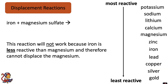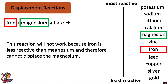Here is an example that would not work: iron plus magnesium sulphate. This reaction will not work because iron is less reactive than magnesium and therefore cannot displace the magnesium.